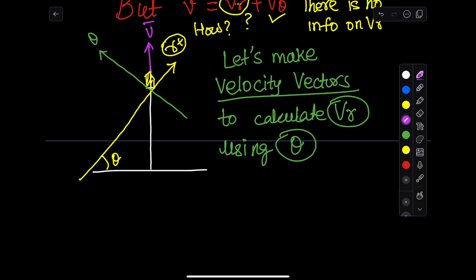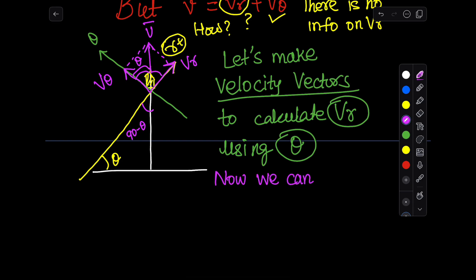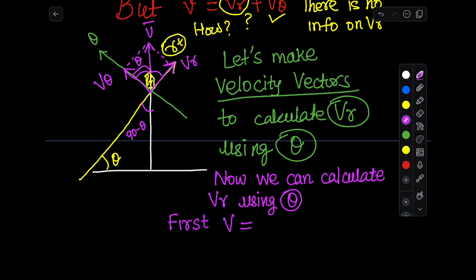Since the velocity is in the vertical direction, we draw the vr component on the right side and the v-theta component on the left side in the positive direction. Both vr and v-theta components are positive. The angle given is 60 degrees. Applying basic trigonometry, we find the angle between v-theta and v, and then write: v-theta equals v times cosine theta.